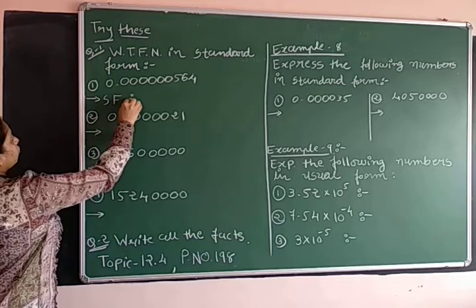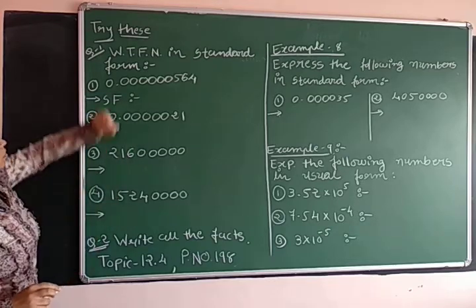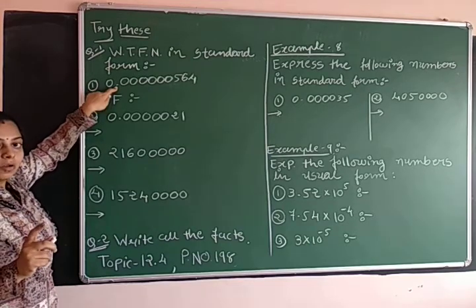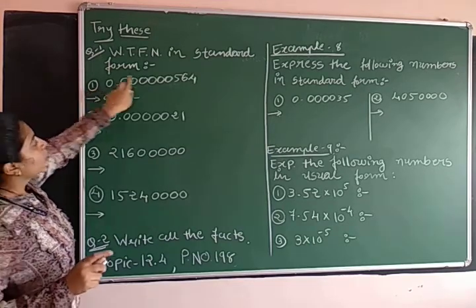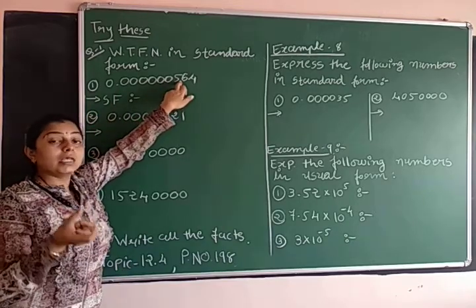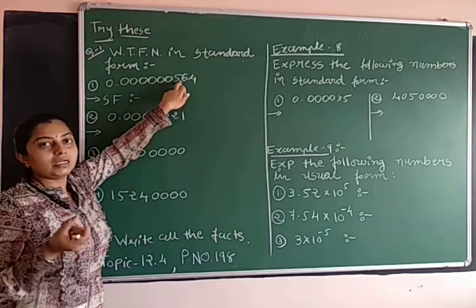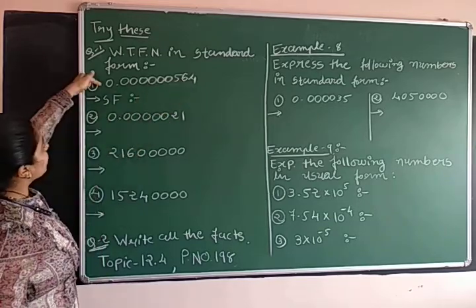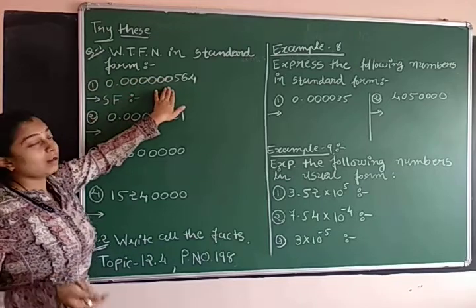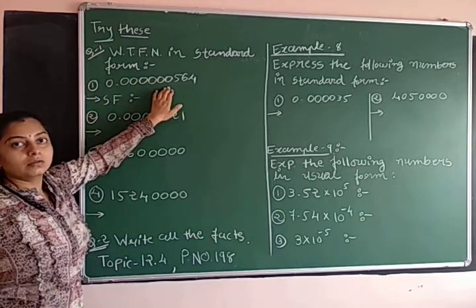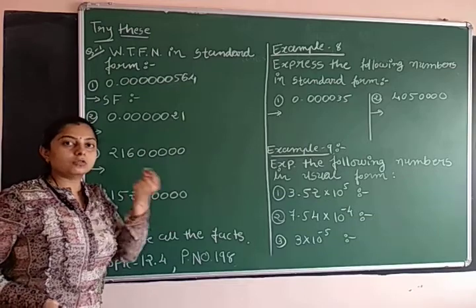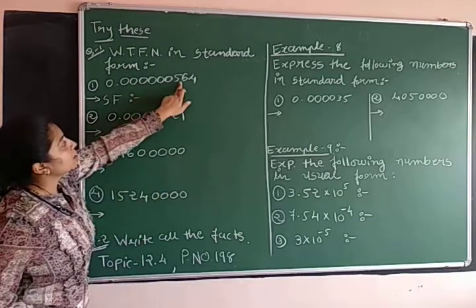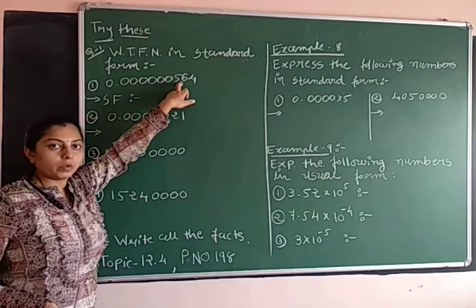So for that, what we will do? Point is given over here. Point will come after one significant digit. Before this 0, 0, 0, 0, 0, this will not be significant. Point will shift. So up to this, first significant digit is 5 over here.